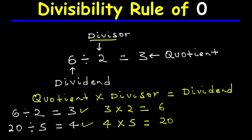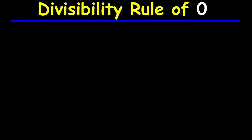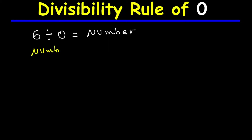What if the divisor is zero? For instance, what is your answer to six divided by zero? Let's say the answer is some number — so six divided by zero equals some number. In this division, six is the dividend, zero is the divisor, and 'some number' is the quotient. Since division is the inverse of multiplication, that quotient multiplied by the divisor zero must equal the dividend six.